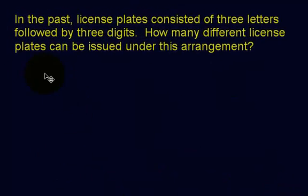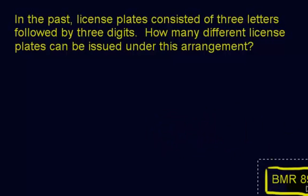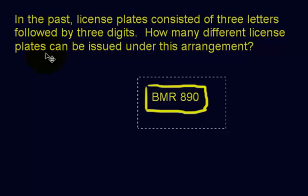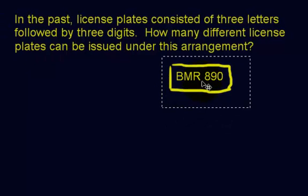Okay, in this example, in the past, license plates consist of three letters followed by three digits. How many different license plates can be issued under this arrangement? Well, this is an example of one type of license plate where you can see that it's three letters followed by three digits. Now each place is considered a task.